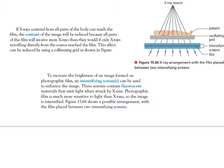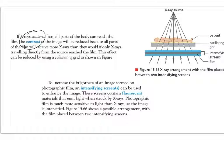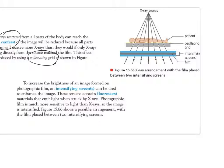Reflection is another thing that causes blurry pictures. You can increase the contrast of an image by using something called a collimating grid. What it does is it absorbs all the free x-rays that are flying around that you don't need. As it shines on the patient, the photo is taken on the film, and the collimating grid absorbs any ray that's not directly going into the film. So you only get a picture formed from the x-rays that go through the body into the film, with no reflection from any other surface.